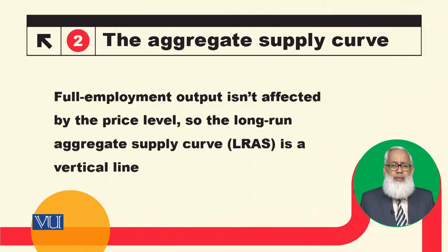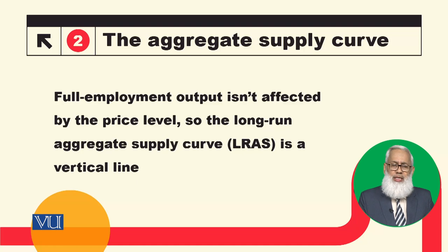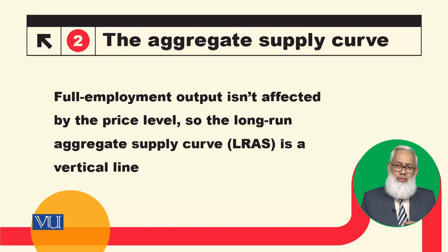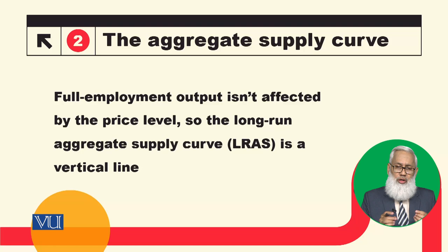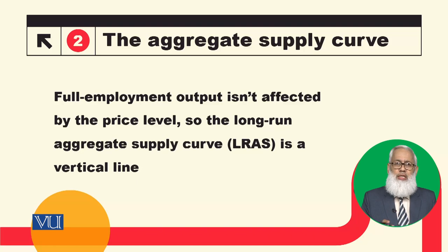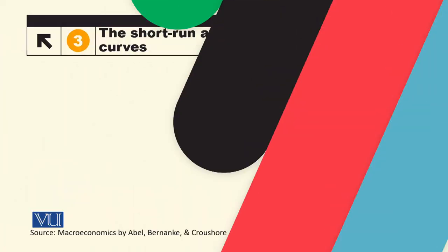اور long-run میں firms کا behavior یہ ہے کہ تمام prices اور wages flexible ہیں اور adjust ہو جاتی ہیں، تمام markets clear ہو جاتی ہیں، labor market clear ہوتی ہے، یعنی employment اپنی full employment level پر آ جاتی ہے۔ Labor demand اور supply کے intersect سے employment level determine ہوتا ہے، پھر production function سے output level determine ہوتی ہے۔ So long-run میں output fix ہوتی ہے، اور long-run aggregate supply curve ایک vertical line ہوگی اس fixed output level پر، جبکہ short-run میں horizontal line ہوگی۔